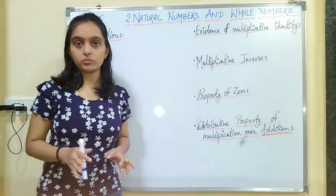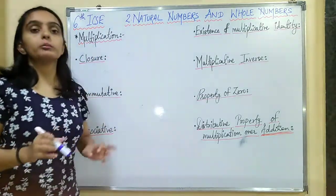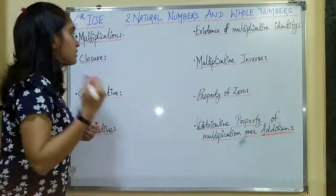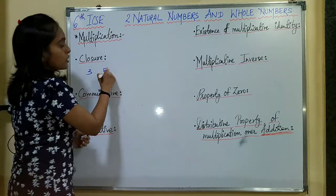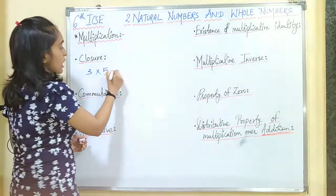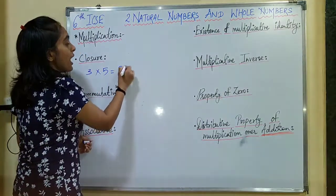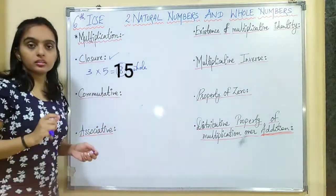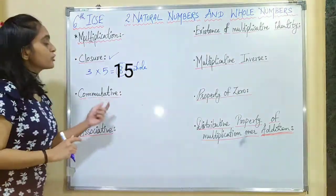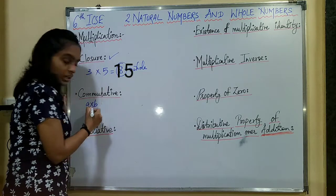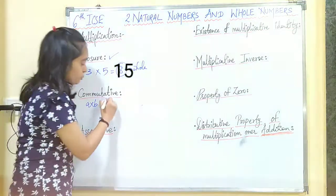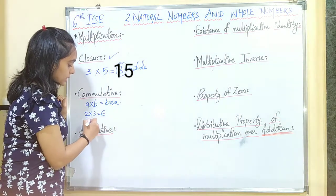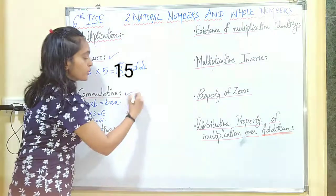Now, multiplication of whole numbers. The first is closure property — multiplying any two whole numbers gives again a whole number. For example, if I have 3 and 5, then 3 multiplied by 5 is 15, which is again a whole number, so closure property holds. Now, commutative property: a multiplied by b is always equal to b multiplied by a. For example, 2 multiplied by 3 is 6 and 3 multiplied by 2 is also 6. So commutative property holds.